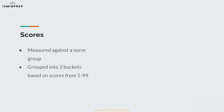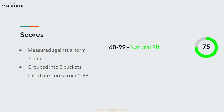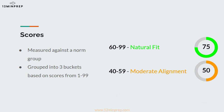Scores are grouped into three buckets based on a score range from 1 to 99. 60 to 99 is a natural fit for a position and strong alignment with the role, meaning you're a good potential fit for the specific position you're applying for. 40 to 59 is a moderate alignment, and 1 to 39 would be a weak alignment, meaning it is not one of your strong areas and that you're likely a poor fit for the role.